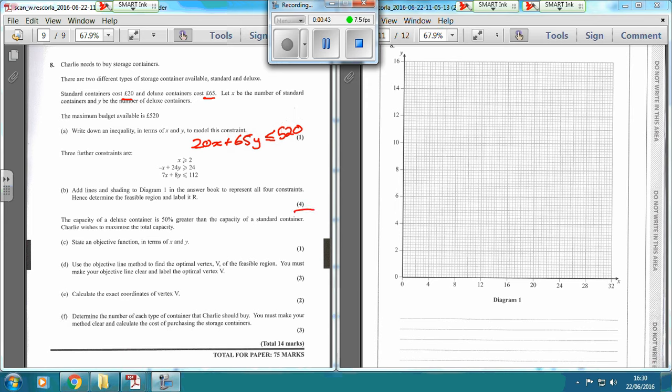And then what we've got to do for four marks now, add lines and shading to Diagram 1 in the answer book to represent all four constraints. So let's start with this 20X plus 65Y is less than £520. So what you could do is for this one you could have X equals 0, and then 520 divided by 65 is 8. So you could have Y equals 8. So 0, 8 is that one there. Or you could have Y equals 0, and then 520 divided by 20 gives us 26. So X equals 26. So 26, which is there, 0.